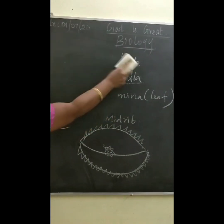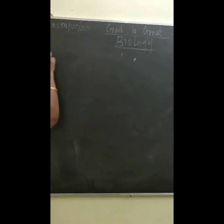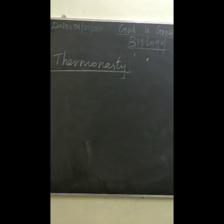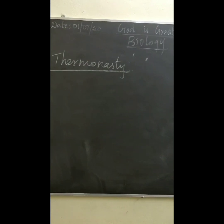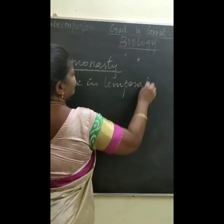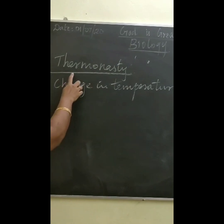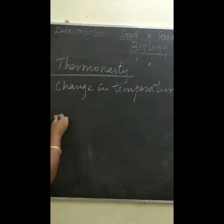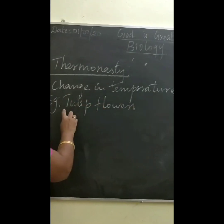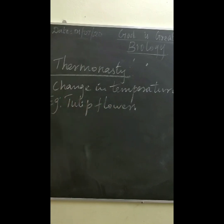The next nastic movement is thermonasty. The movement of a part of a plant associated with a change in temperature is called thermonasty. Example: tulip flowers bloom as the temperature increases.